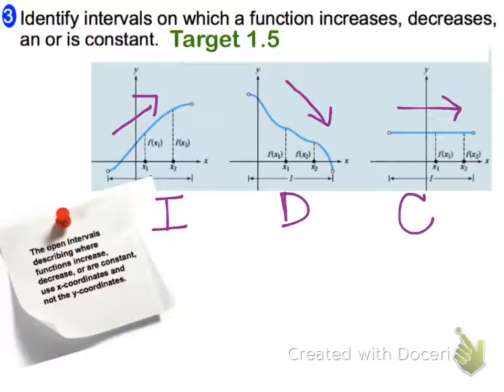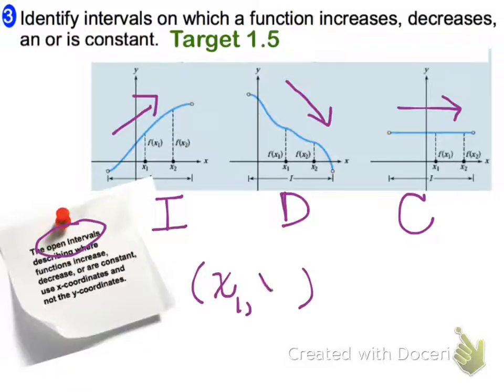When we talk about increasing, decreasing, or constant, we are going to use open intervals, meaning we're always going to use parentheses — never brackets — and we're always going to talk about the x values, going from the smallest x value to the largest x value. The reason for the parentheses is because oftentimes the ending points are a point of change, where it goes from increasing to decreasing or vice versa, so we use parentheses.